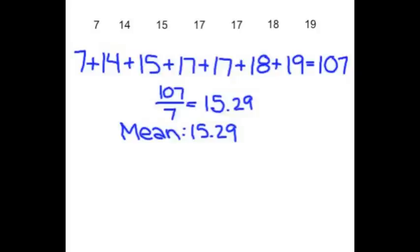The mode is the number that appears the most times. Since there are two 17s, the mode would be 17.